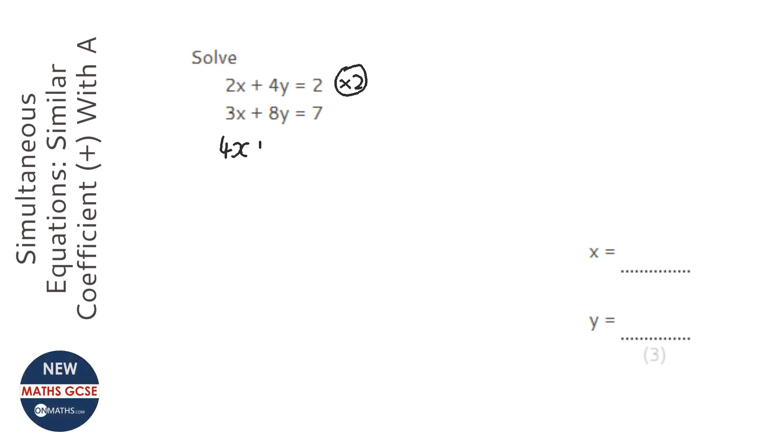So I'm going to times everything by 2. It's important you get everything times by 2. And I'm just going to rewrite the other equation underneath. Sometimes it's useful to have it in the same order. Sometimes it's not.